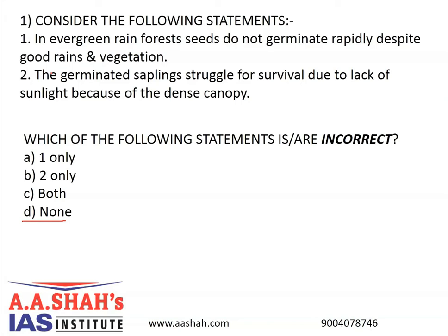Tropical evergreen rainforest biome provides optimum environmental conditions for growth and development of plants and animals because it is characterized by high rainfall and temperature throughout the year. Normally, the evergreen rainforest biome extends between 10 degrees north and 10 degrees south latitudes. The maximum development of this biome has taken place in the Amazon basin in South America, Congo basin in Africa, and the Indo-Malaysian region mainly in Java, Sumatra, Borneo, Malaysia and Guinea.